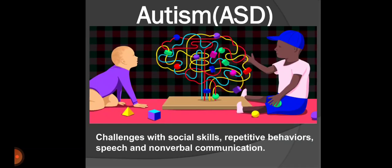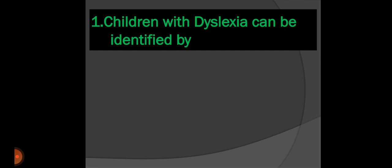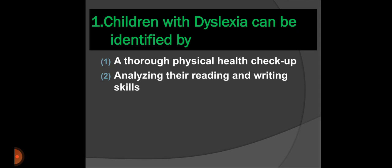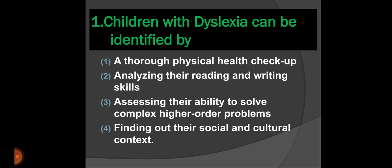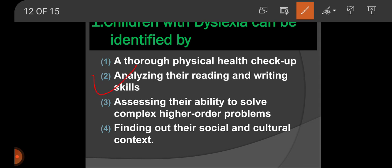I hope I made it clear about the different types of learning disabilities in this video. There will be a compulsory question from this topic, so let us try to solve few questions. The first one: children with dyslexia can be identified by - Option 1, a thorough physical health check-up. Option 2, analyzing their reading and writing skills. Option 3, assessing their ability to solve complex higher order problems. Option 4, finding out their social and cultural context. Here we have seen dyslexic children have disability in reading. So analyzing the reading and writing skills. The answer is option 2.